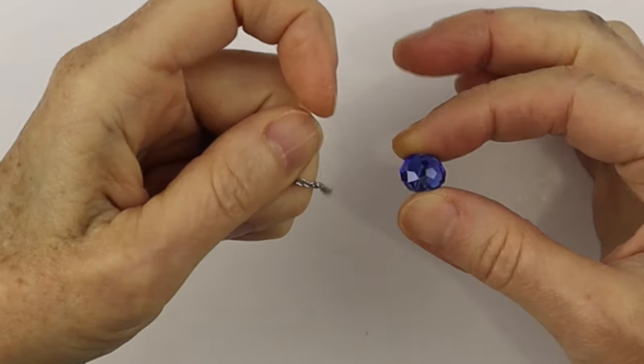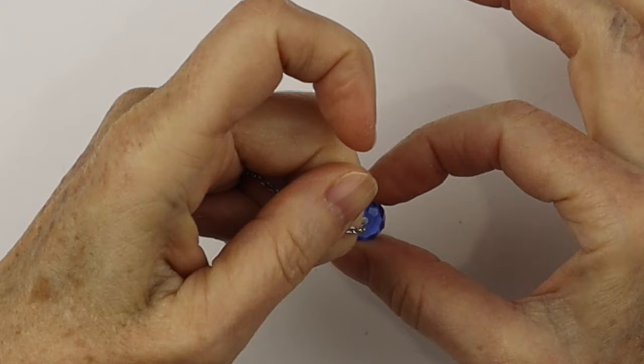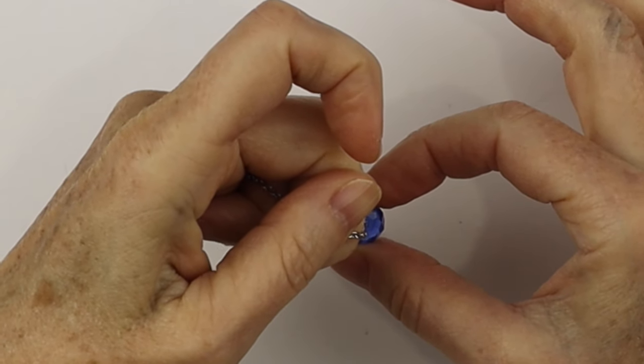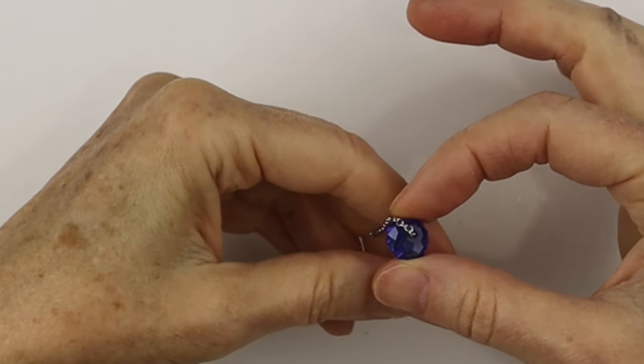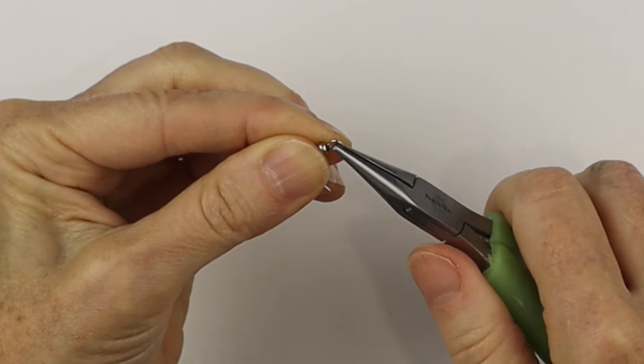Then I'm going to take a faceted glass bead with a hole that's large enough for the chain and just slide that chain through the hole. Now we're going to take a surgical steel earring hook and open it up.